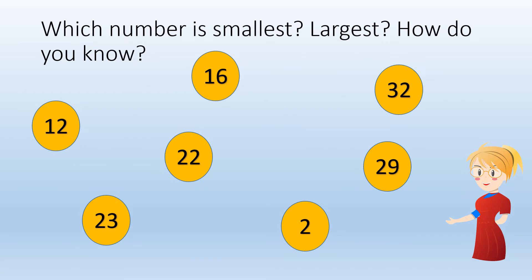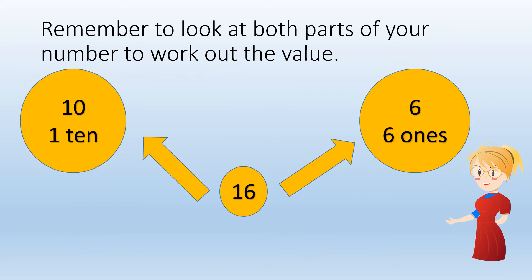Which of the numbers here is the smallest? Which is the largest? How do you know? The two is the smallest number because it is the only one that is just a ones number. 32 is the largest number because it is made up of three tens and two ones.